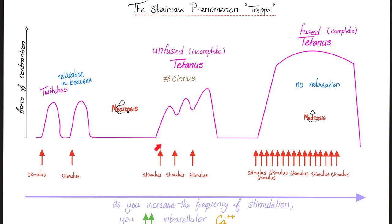If stimuli come rapidly one after another, you get clonus, or unfused (incomplete) tetanus — the muscle partially relaxes between stimuli. But if you go up and never come down, continuing upward, this is fused (complete) tetanus. A surgeon standing for three hours has tetanus in their back muscles to support body weight.